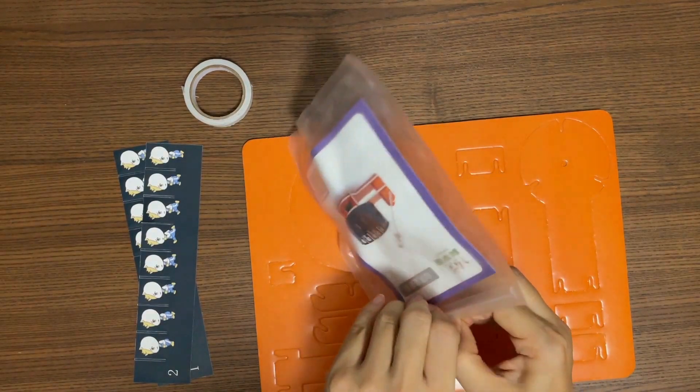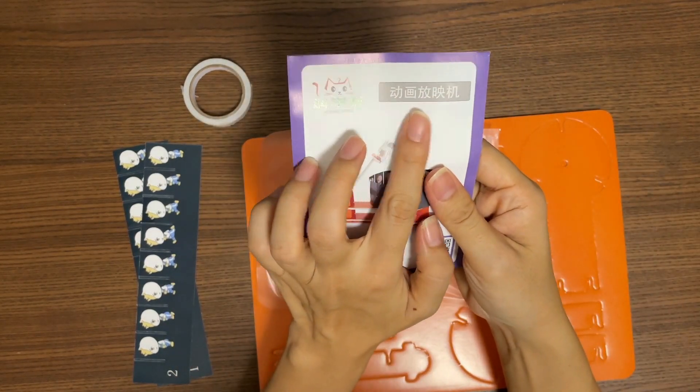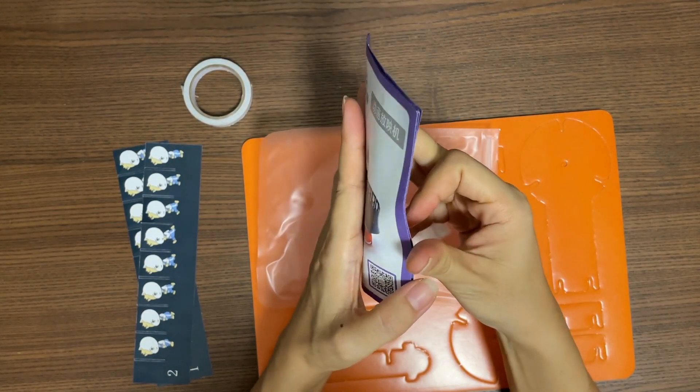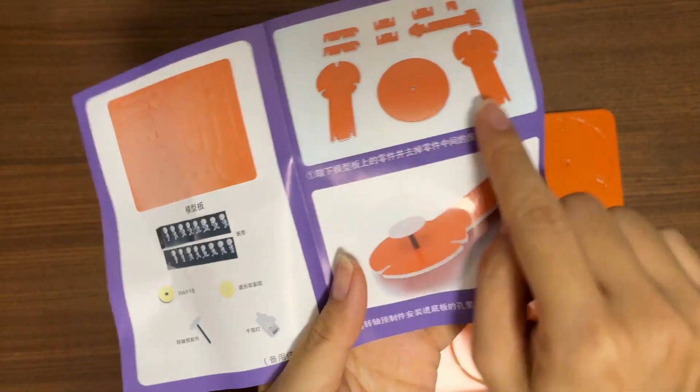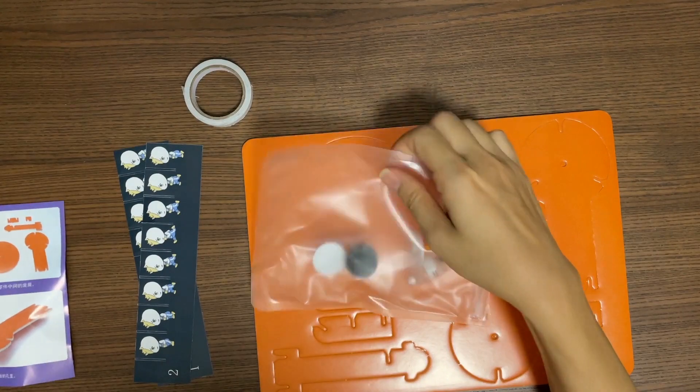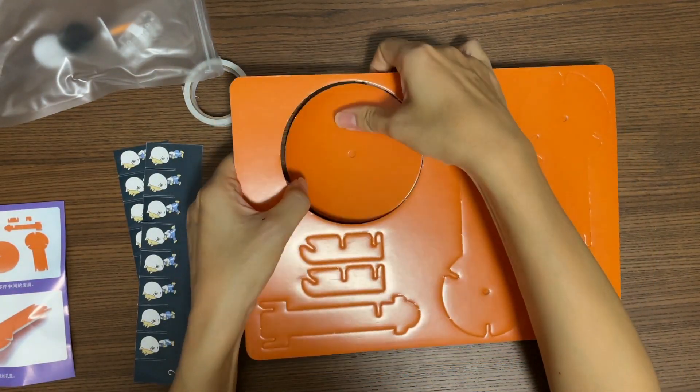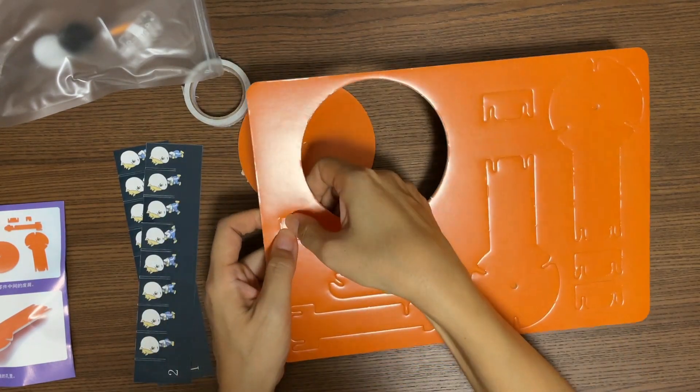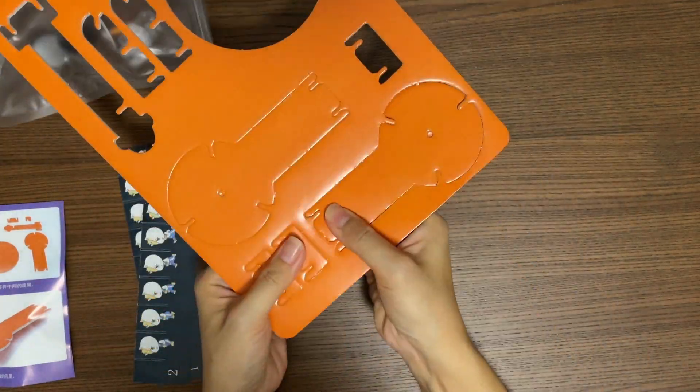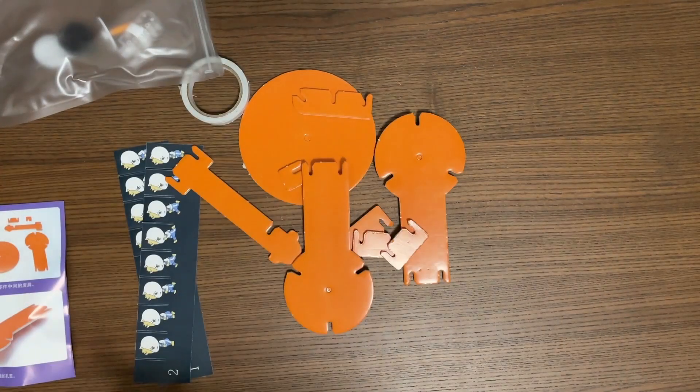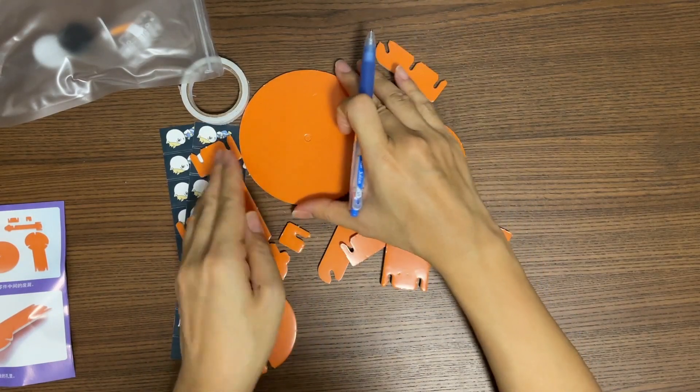So let's open the bag first. This is the instruction menu. Turn to step one. Step one asks us to remove these parts from the board. Use a pen to remove these little circles.